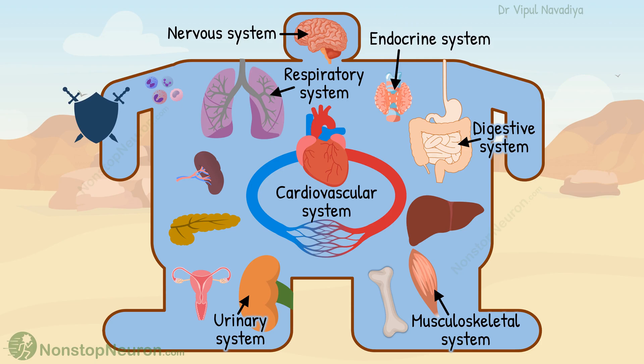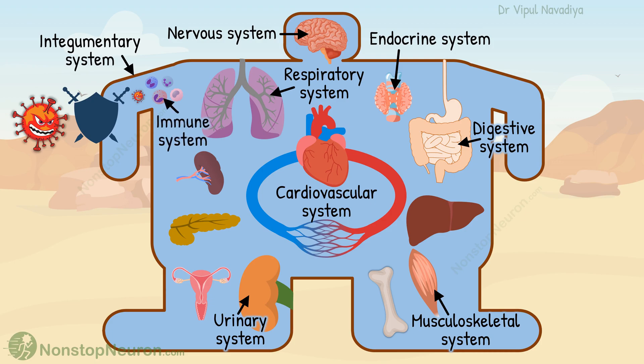There are also defense systems to protect the internal environment from external threats. The integumentary system is the first line of defense — it's a strong wall between the internal and external environment, preventing entry of most harmful things into the body. But some things do find their way inside the body, and for them we have the immune system as the second line of defense. It identifies foreign cells and substances and destroys them.